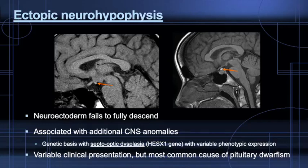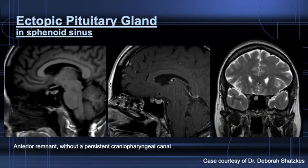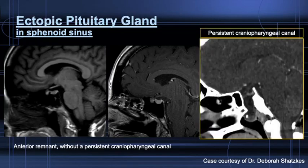Examples of ectopic neurohypophysis occur due to incomplete descent. These may be associated with other CNS anomalies, sometimes in the setting of septo-optic dysplasia, but most often present in the setting of dwarfism. A rarer location for pituitary tissue is within the sphenoid sinus. A persistent craniopharyngeal canal with CSF and pituitary tissue at the nasopharynx is a finding one should not biopsy.